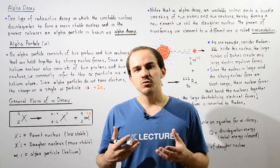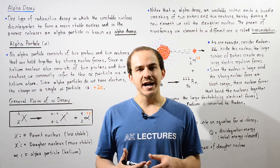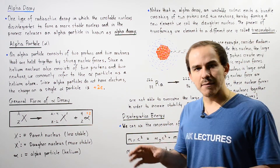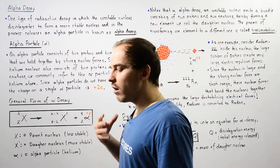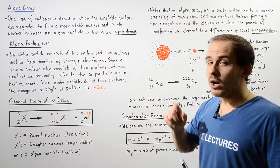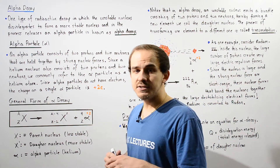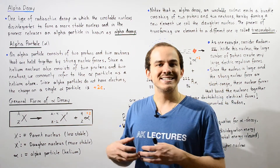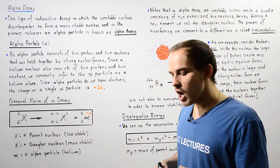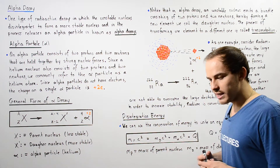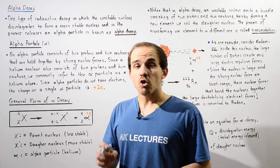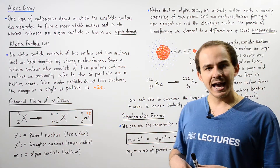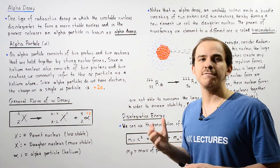Now that we have defined what radioactivity is and what radioactive decay is, let's examine one particular type of radioactive decay — one in which an unstable nucleus disintegrates or breaks down into a more stable nucleus and in the process releases an alpha particle. This type of radioactive decay is commonly known as alpha decay.